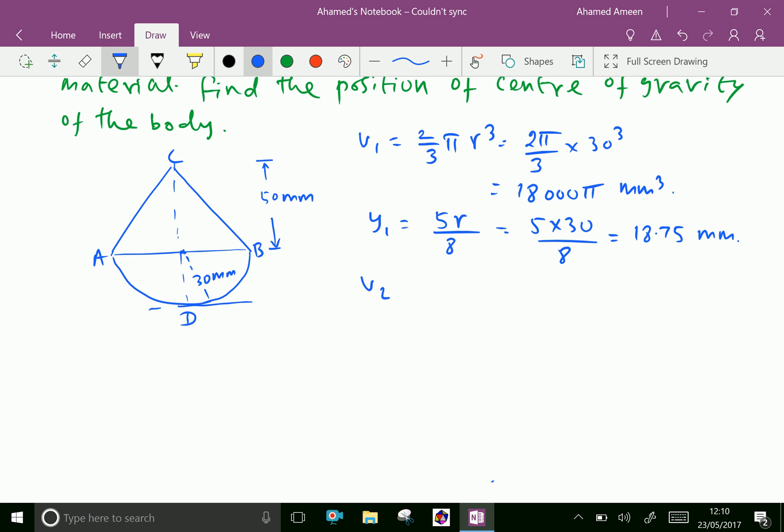Now, V2 is volume of a cone. V2 equals 1 by 3 pi r squared h equals 1 by 3 pi into radius is 30, that is 30 squared and height is 50. Let us calculate this value: 30 squared is 900 into 50 over 3 equals 15,000 pi mm cubed.